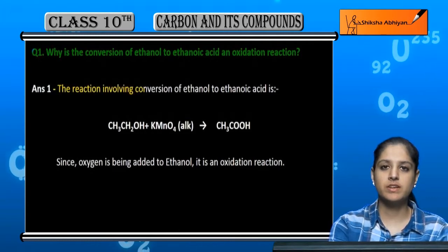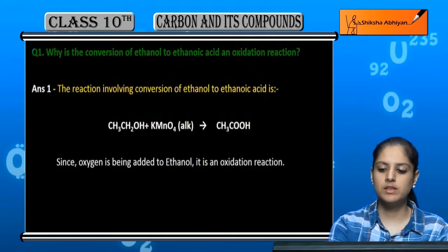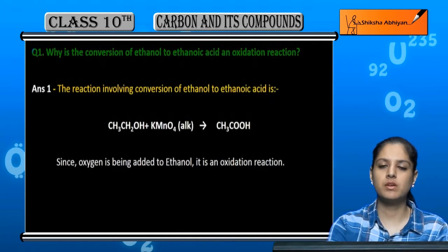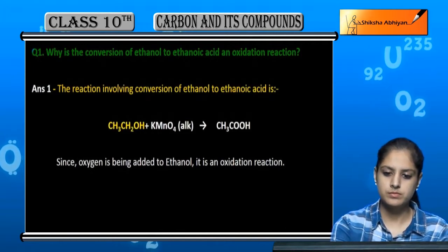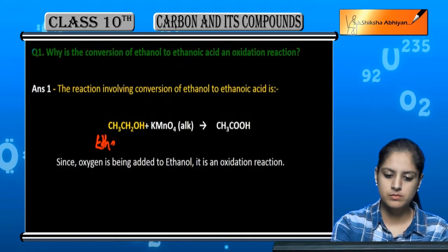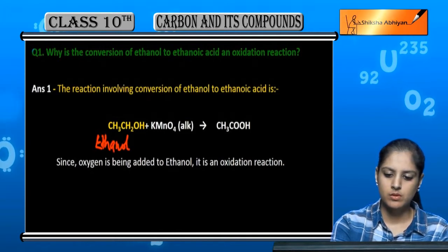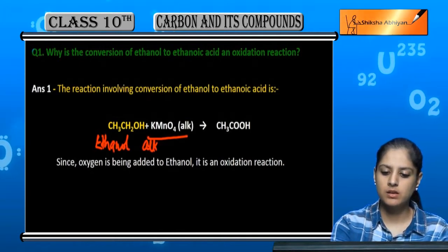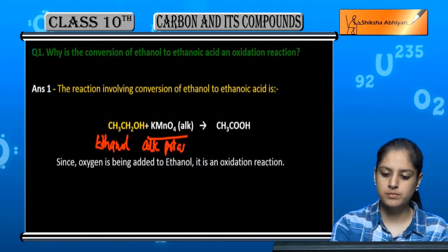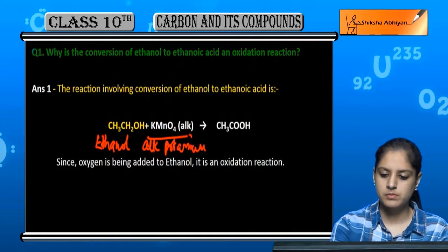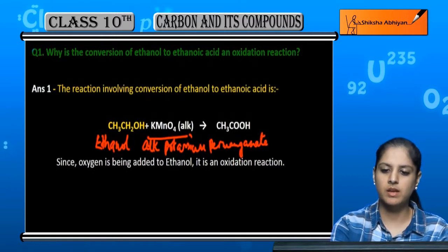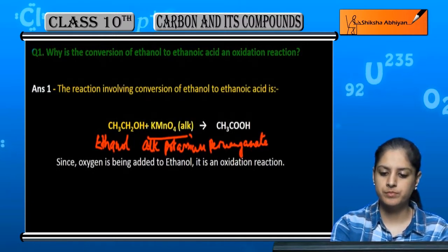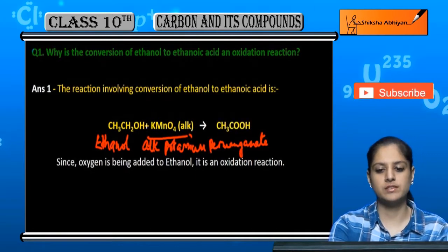In the reaction where ethanol is converted to ethanoic acid, this is ethanol. It reacts with alkaline potassium permanganate, and potassium and manganese react, and ethanoic acid is further formed.